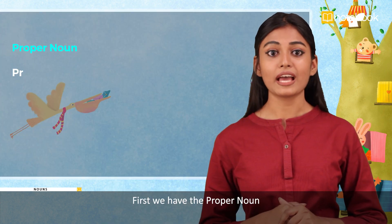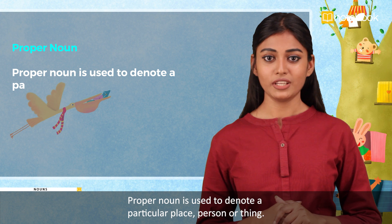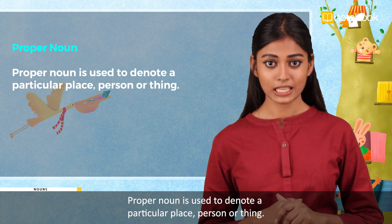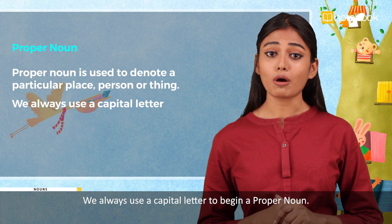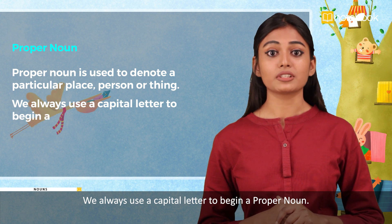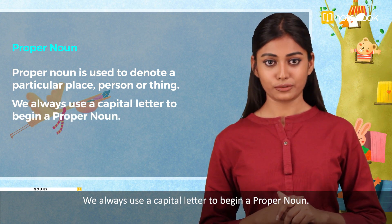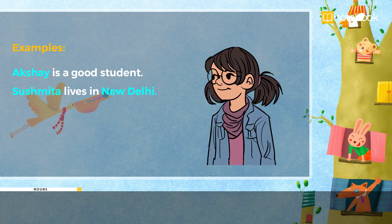First, we have the proper noun. A proper noun is used to denote a particular place, person or thing. We always use a capital letter to begin a proper noun. Examples: Akshay is a good student. Sushmita lives in New Delhi.